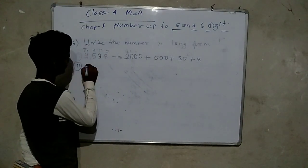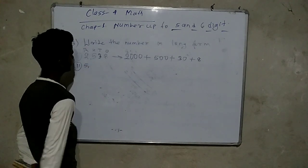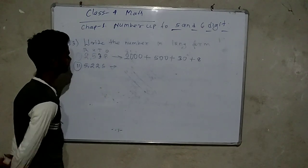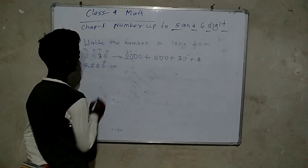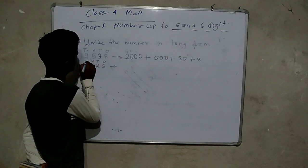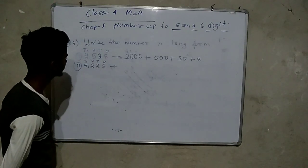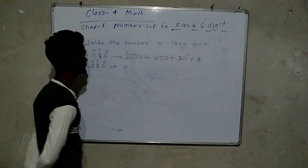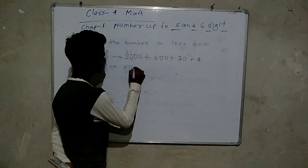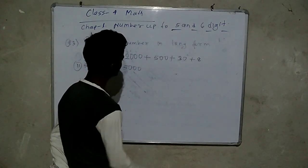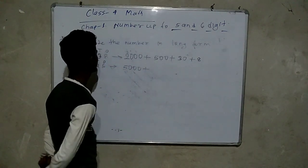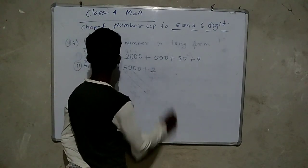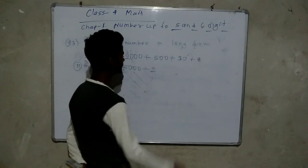Next example: five thousand two hundred twenty-five. So: thousands place — write 5 followed by three zeros, then plus. Hundreds place — write 2 followed by two zeros, then plus.